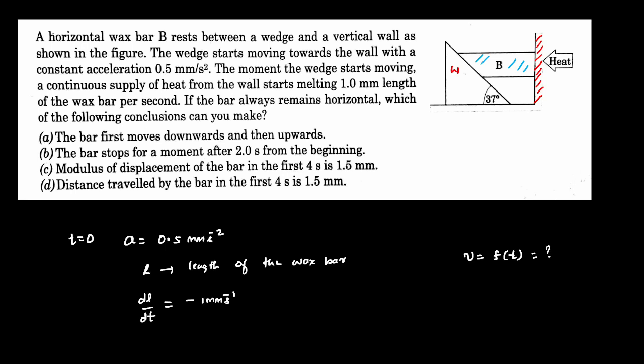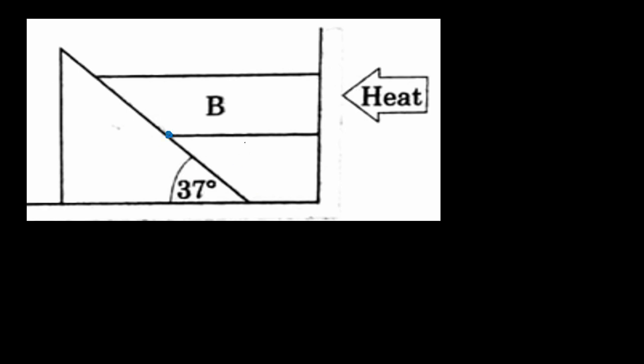First, let us give some names to the relevant points so it becomes easy to handle. I'm drawing a perpendicular — this angle is 90 degrees — and let me name these points as P, Q, R, S, and T just for reference.